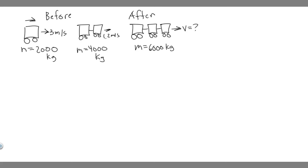In this problem, we're told a railroad car of mass 2×10⁴ kilograms moving at 3 meters per second collides and couples with two coupled railroad cars, each of the same mass as a single car and moving in the same direction at 1.2 meters per second. Part A: what is the speed of the three coupled cars after the collision? And Part B: how much kinetic energy is lost in the collision?